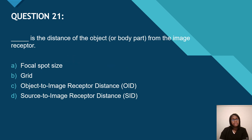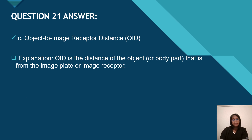Question 21: blank is the distance of the object or body part from the image receptor. Is it focal spot size, grid, object to image receptor distance (OID), or source to image receptor distance (SID)? Object to image receptor distance, or OID, is the answer.